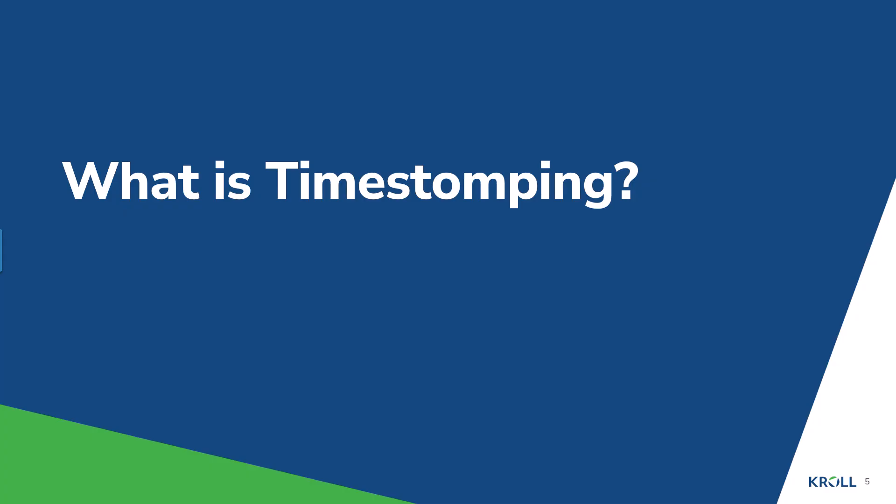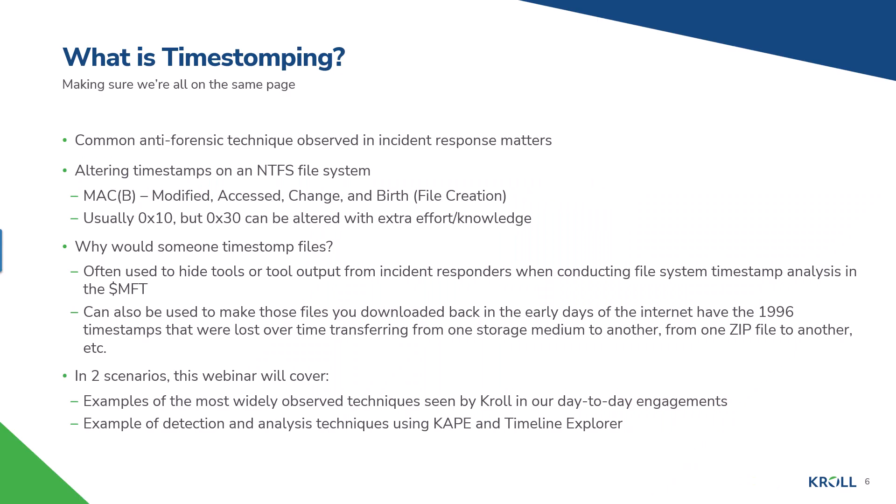So let's talk about timestomping — what is it? It's a common anti-forensic technique observed in incident response matters. I see it very often, probably on 40–50% of the cases that I work. It's basically where the timestamps on an NTFS file system are altered for a file — the MACB timestamps: Modified, Access, Change, and Birth, which is the file creation. We usually see it in the Standard Information Attribute (0x10), but the 0x30 File Name attribute can be altered with extra effort and knowledge.